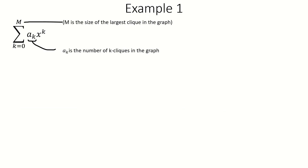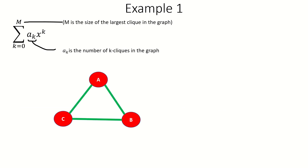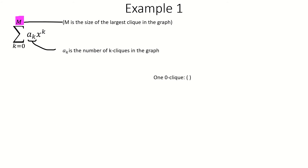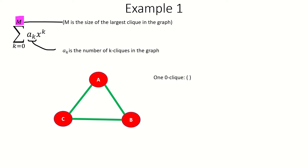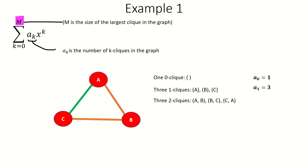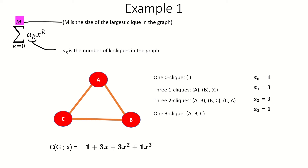Here are a few examples of clique polynomials. The largest clique in this graph is a 3-clique, meaning m is 3, so we'll be summing from k equals 0 to 3. This graph has one 0-clique, corresponding to the empty set of vertices, so a sub 0 is 1. It has three 1-cliques, each corresponding to a single vertex, so a sub 1 is 3. It also has three 2-cliques, each corresponding to an edge or pair of two mutually connected vertices, so a sub 2 is 3. It has one 3-clique, so a sub 3 is 1. The clique polynomial of this graph, then, is 1 plus 3x plus 3x squared plus x cubed.